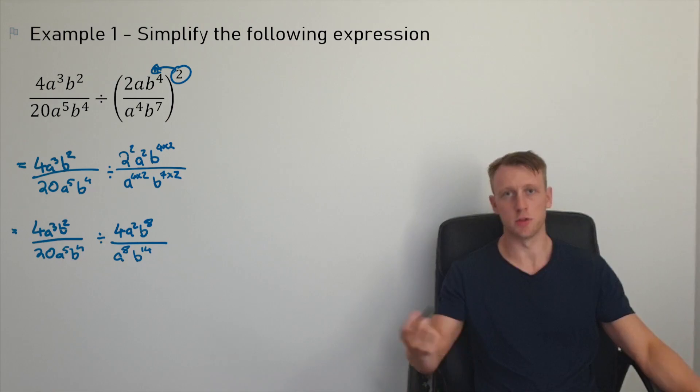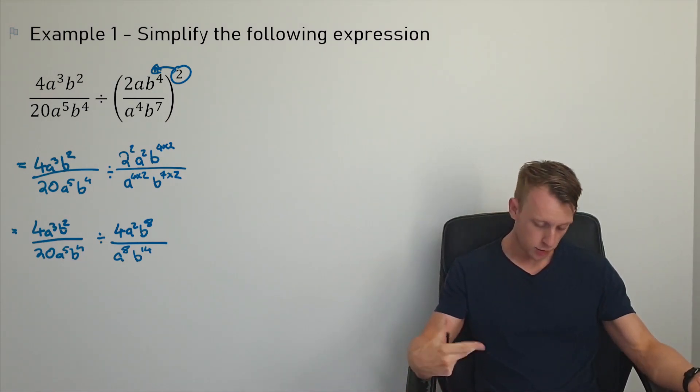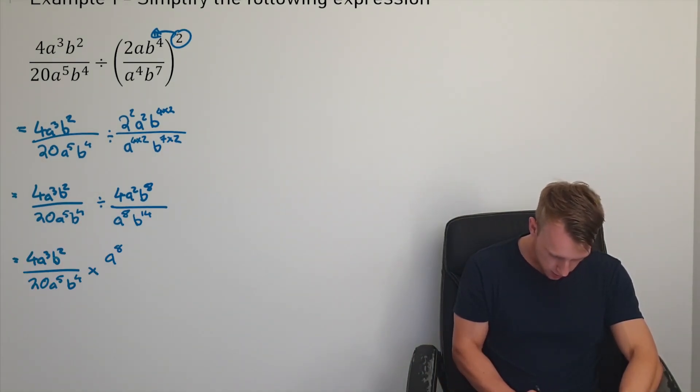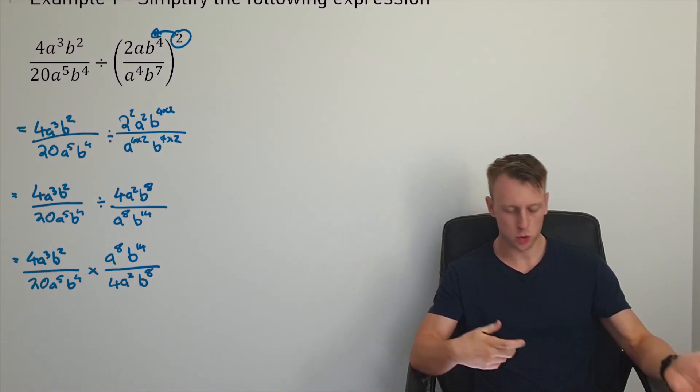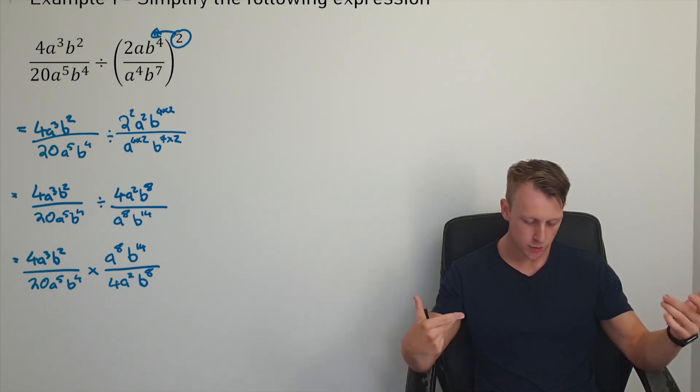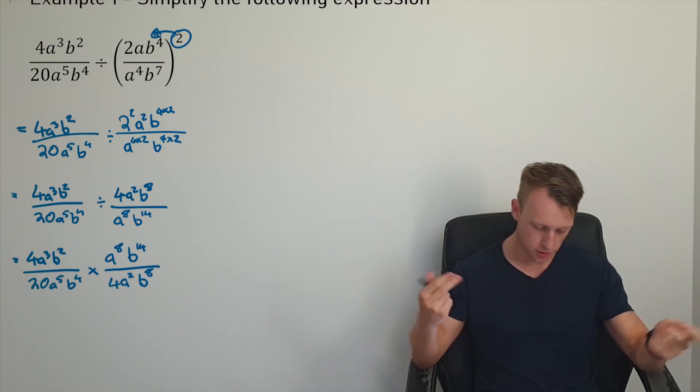And so we've got division of fractions. So I'm just going to flip that second fraction and multiply. And so since I've got two fractions being multiplied together here, I'm just going to bring all the terms together following the first index law. So numerator together and denominator together.